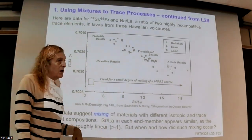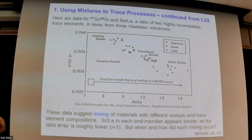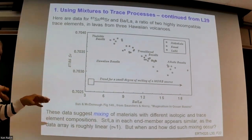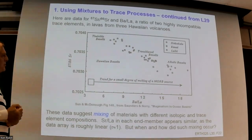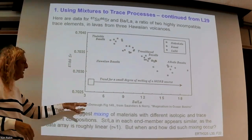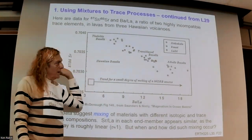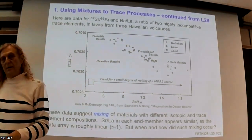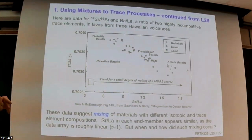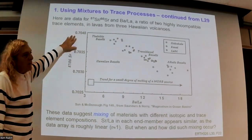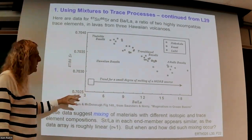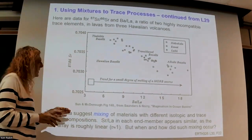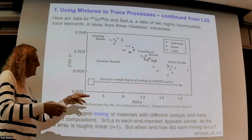Normally we'd expect a positive correlation between 87/86 Sr and Ba/La if this were simply a matter of taking a single bit of mantle and aging it — both ratios involving more incompatible over less incompatible elements. But we see a negative correlation, which is a big question. I go through a series of calculations to show why this can't come from a single process — it must involve mantle heterogeneity producing variation in the isotope ratios, while the modern process of melting is what makes the Ba/La variation.